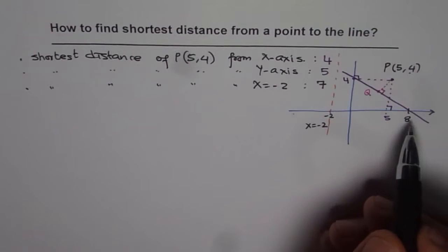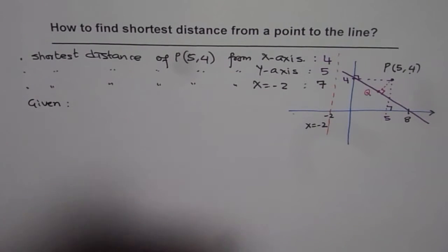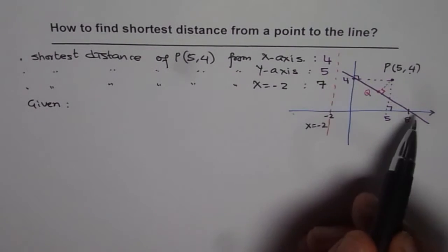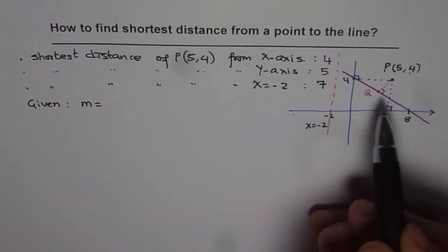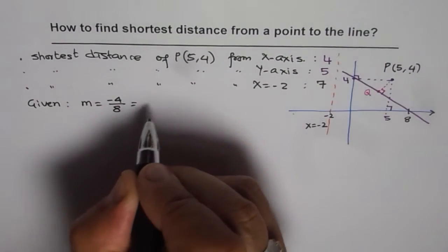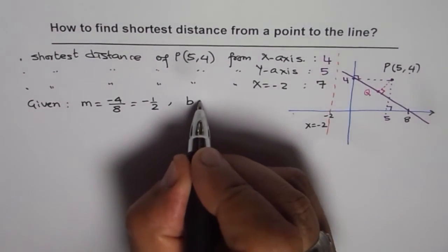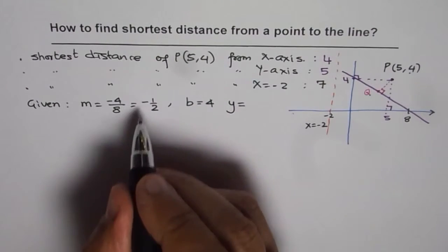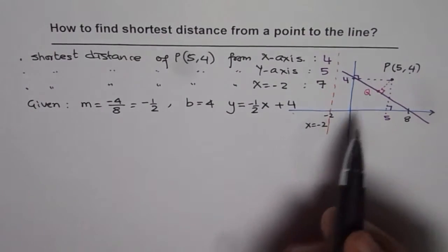To solve this kind of question, first we need the equation of the line itself. The given line has an x-intercept of 8 and y-intercept of 4. Slope is rise over run: moving from 4 to 8, rise is minus 4 and run is 8, so slope is minus 4 over 8, which is minus half. The y-intercept b is 4. Therefore, the equation of this line is y = (−1/2)x + 4.